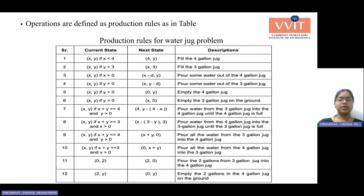When the current state is x, y: if x is less than 4, we need to fill the 4-liter jug, giving us state 4 comma y. If x, y has y less than 3, we need to fill the 3-liter jug, giving us state x comma 3.